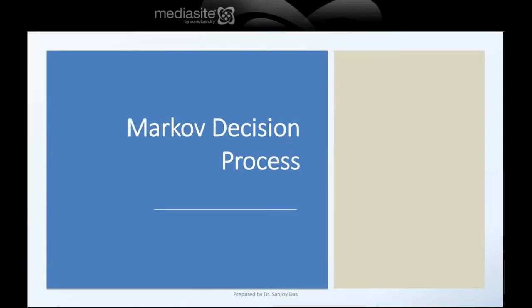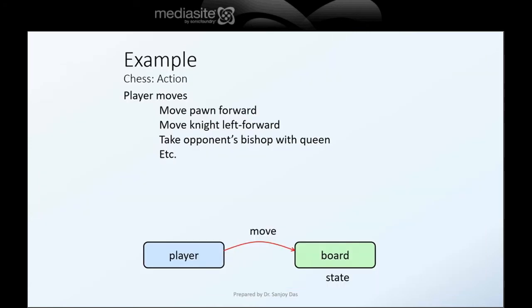We will begin our discussion on reinforcement learning with the topic Markov decision process. We first take up a motivating example which is chess. In chess, a player makes a move — the move can be a pawn being moved forward, a knight being moved, taking the opponent with the queen, and so on. These are the possible moves of the player.